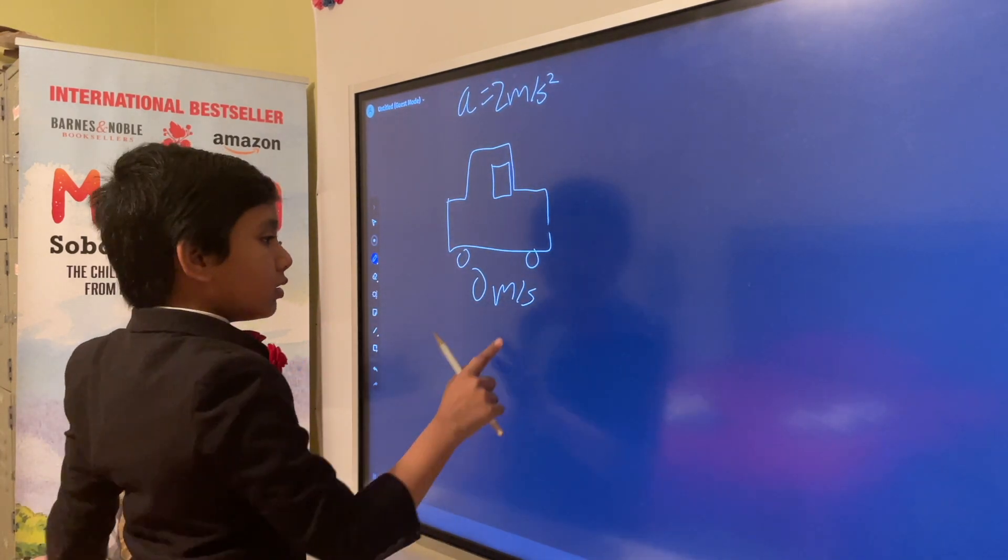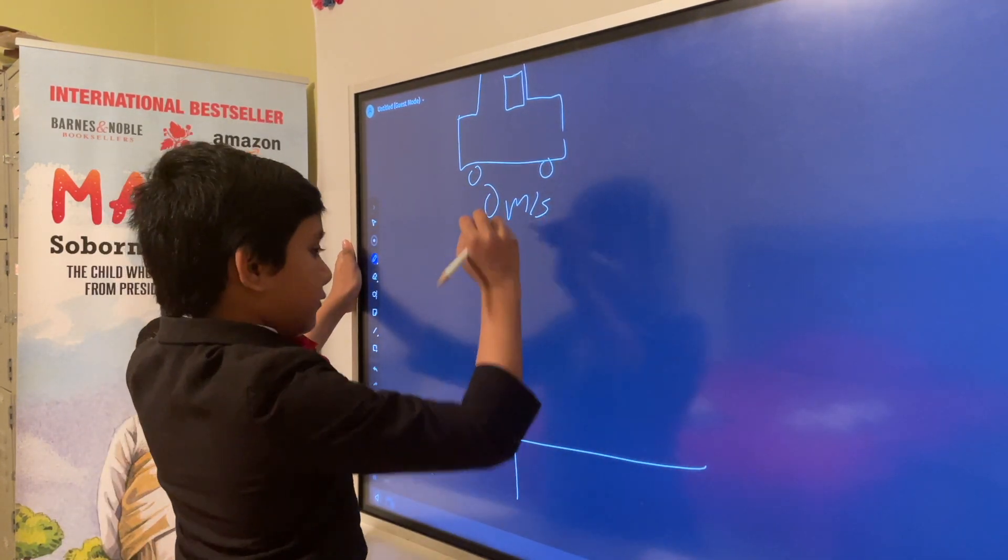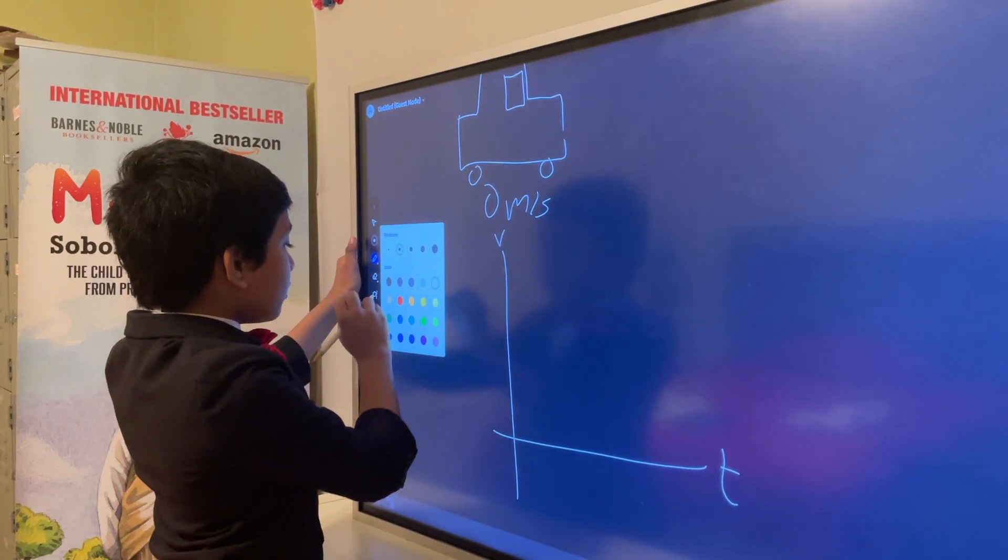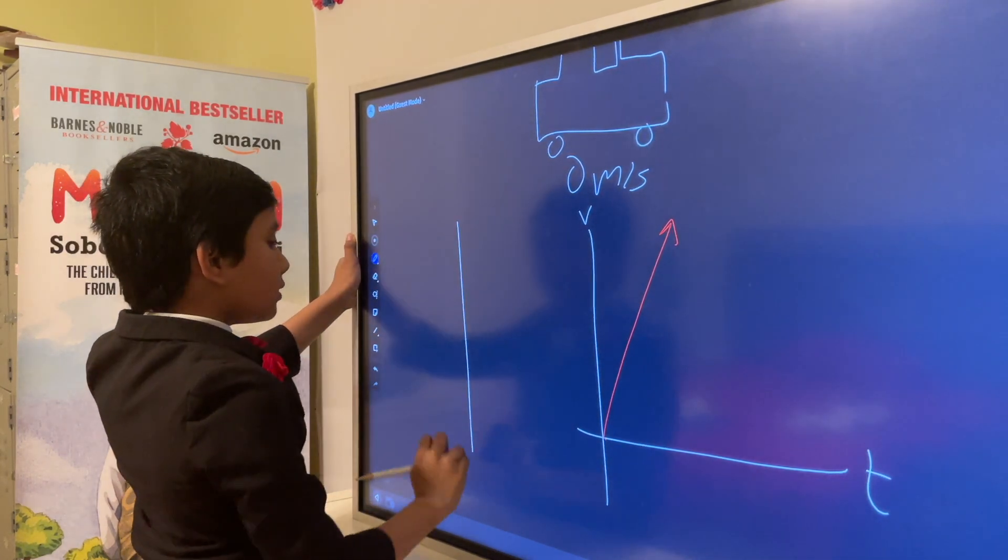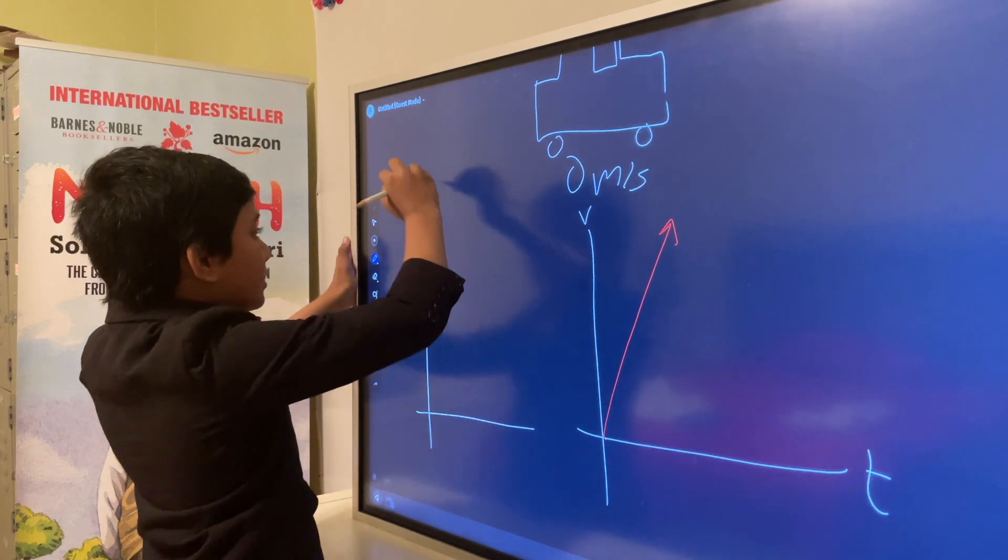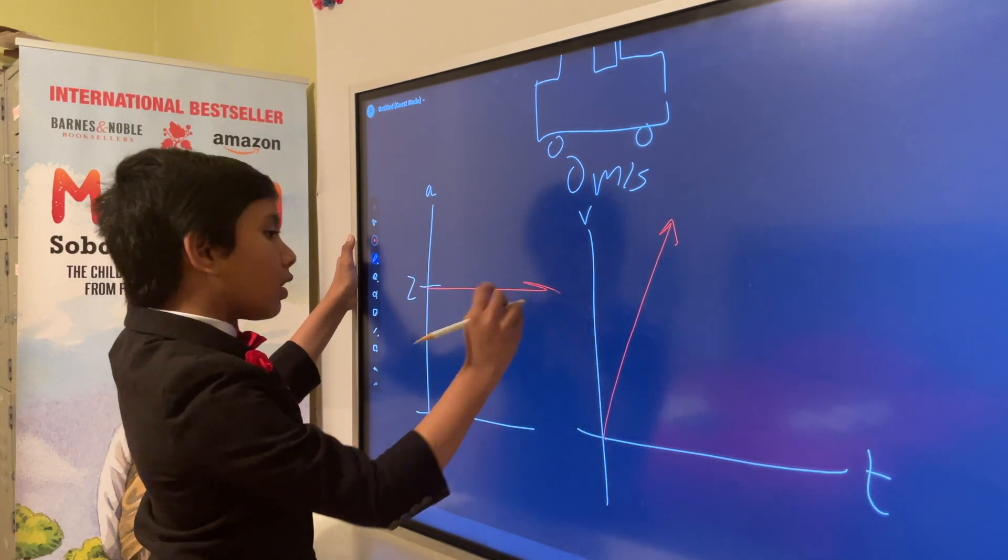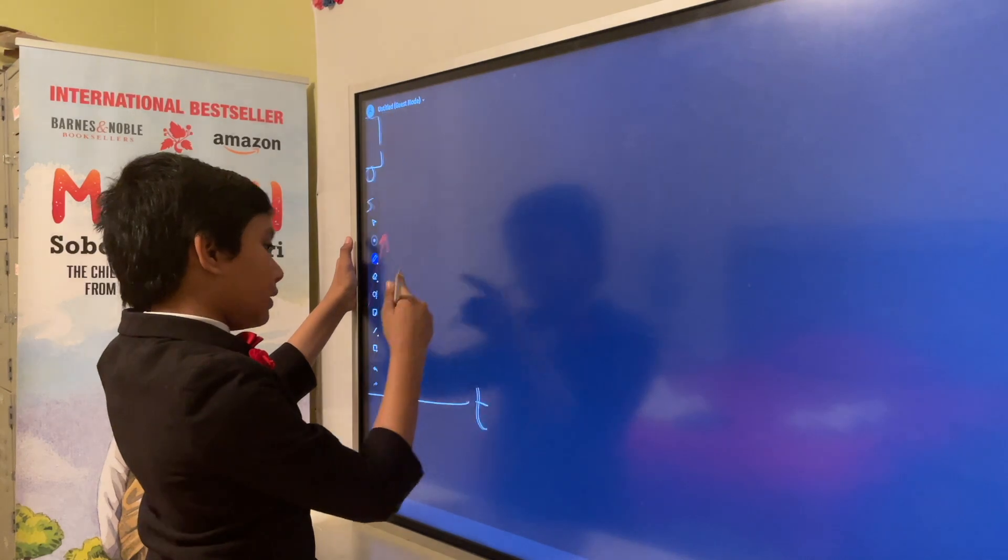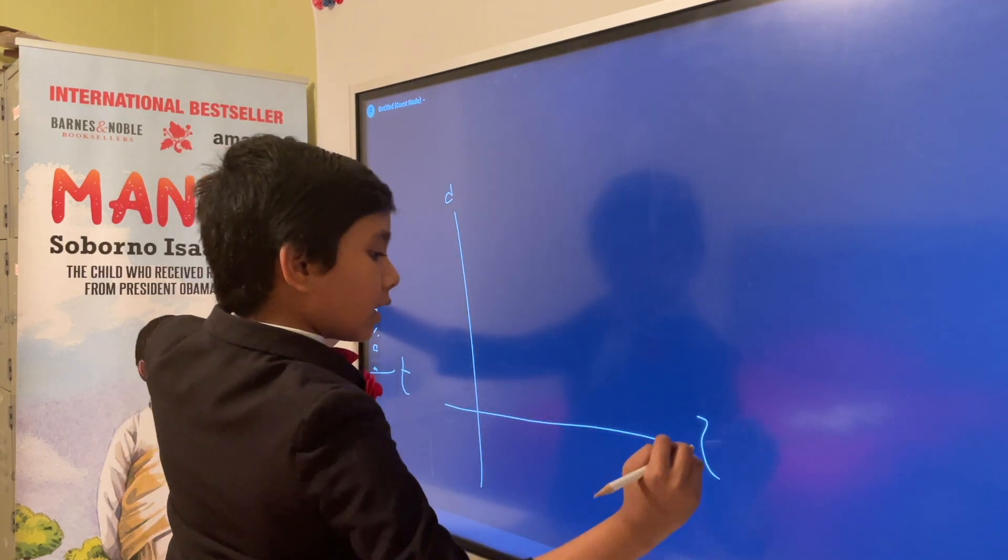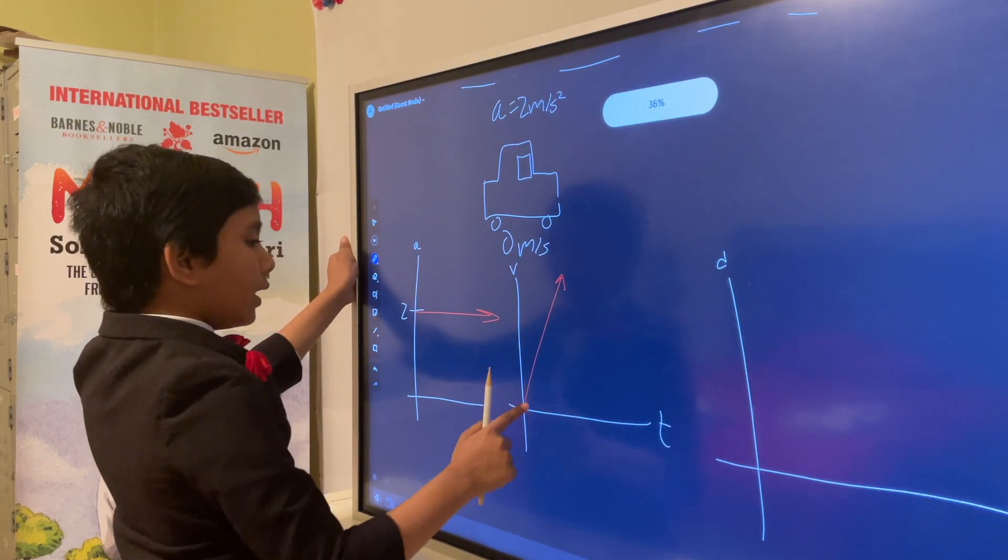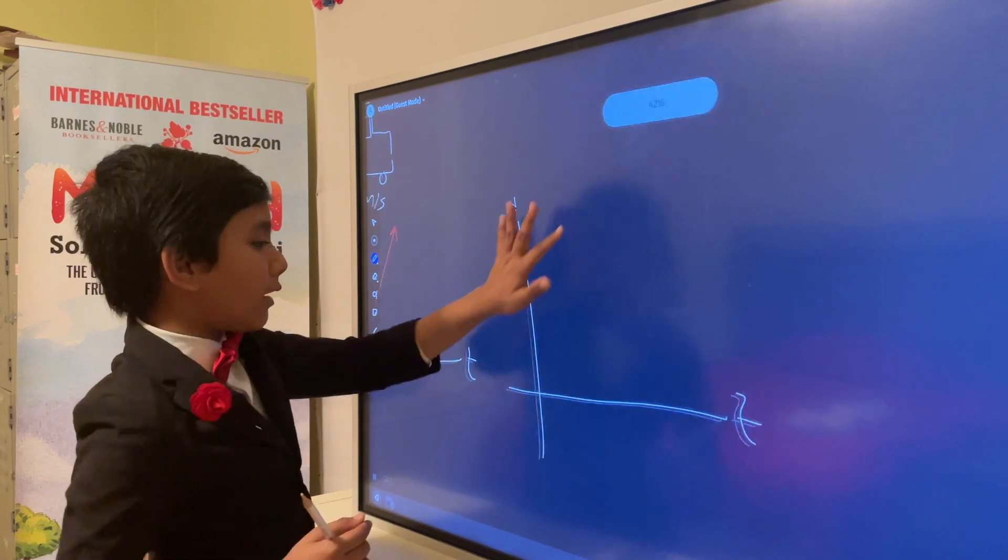Velocity is pretty simple. VT increases with a slope of 2, because it increases by 2 meters per second every second. The acceleration now is at the value of 2. The distance over time is going to actually be something like a quadratic. How can we find it out? Well, kinematics.